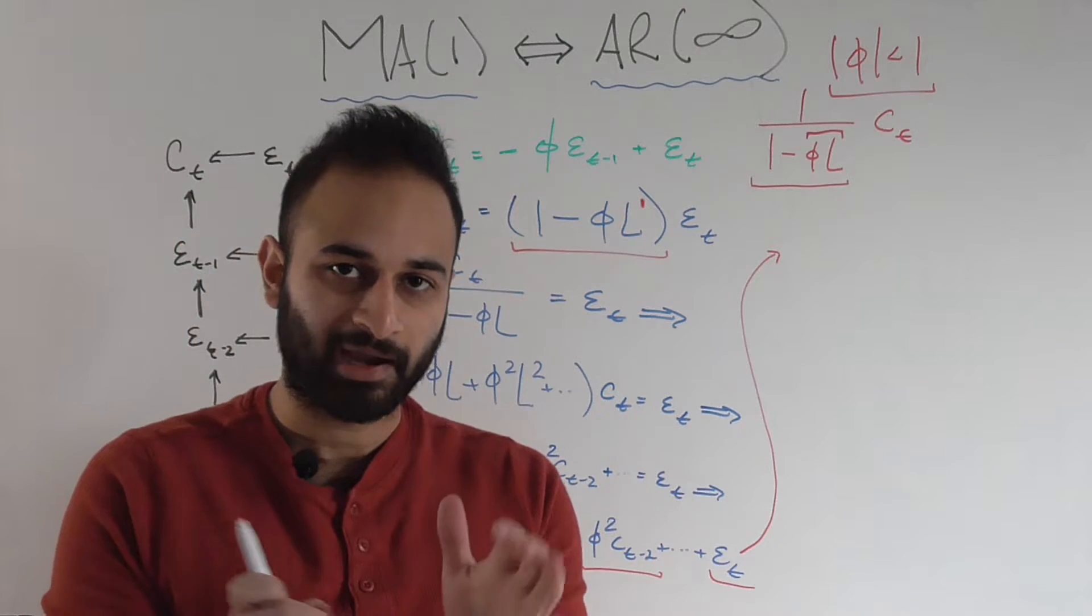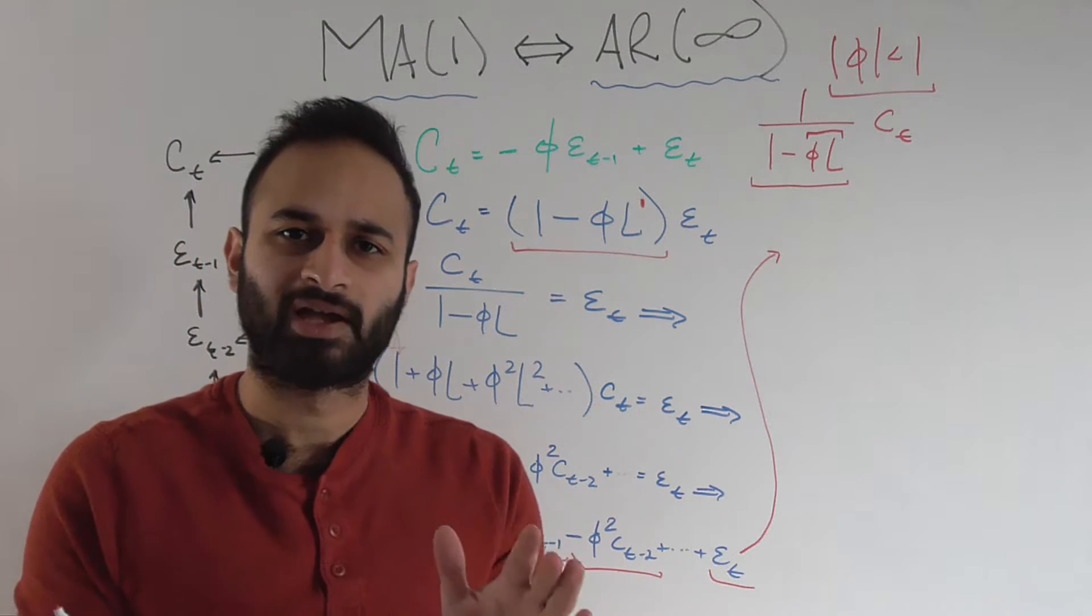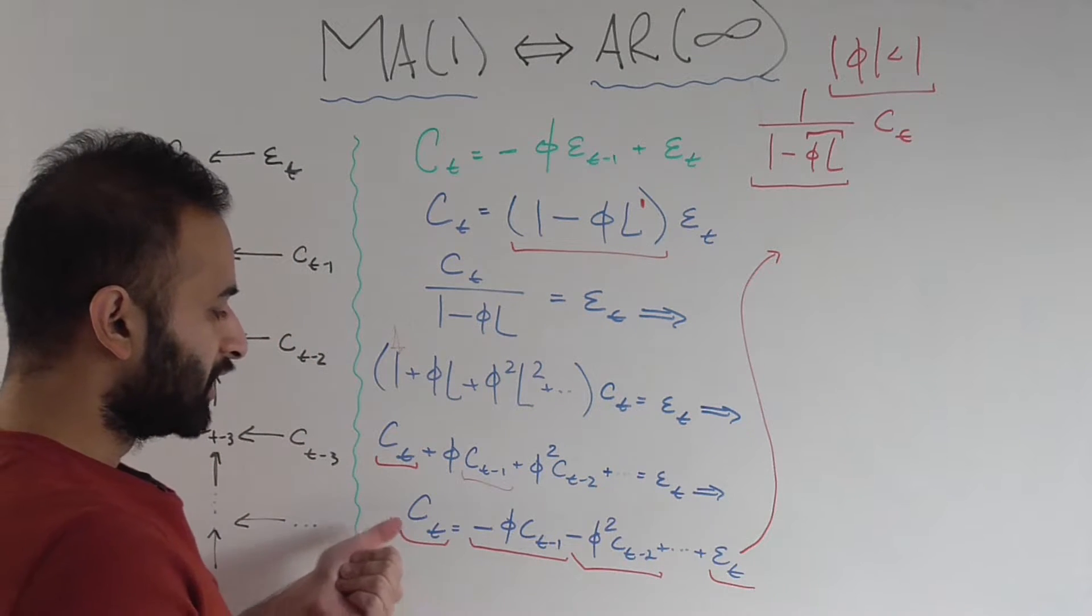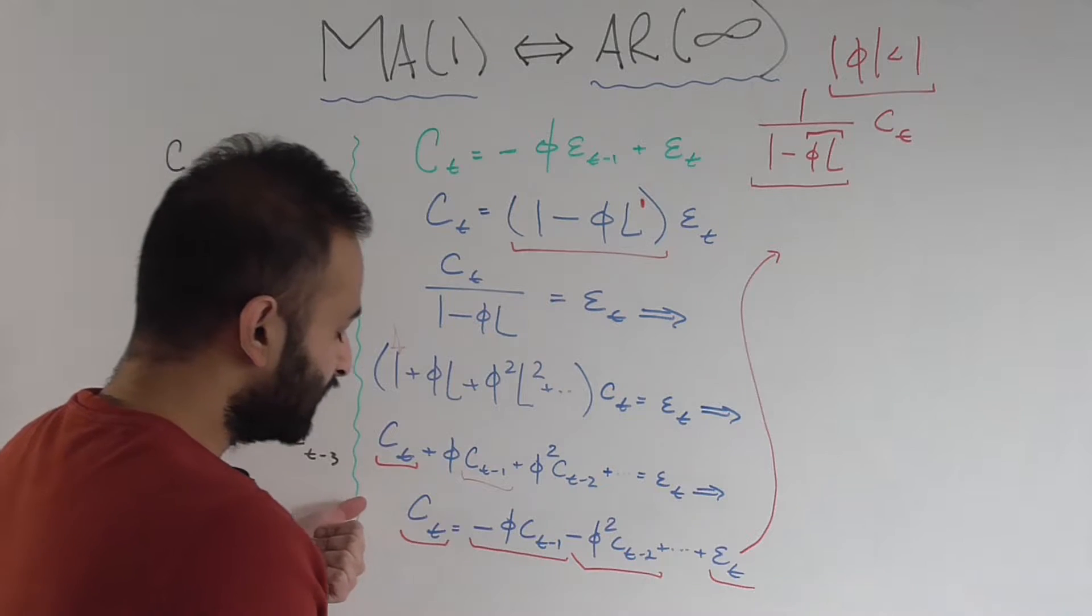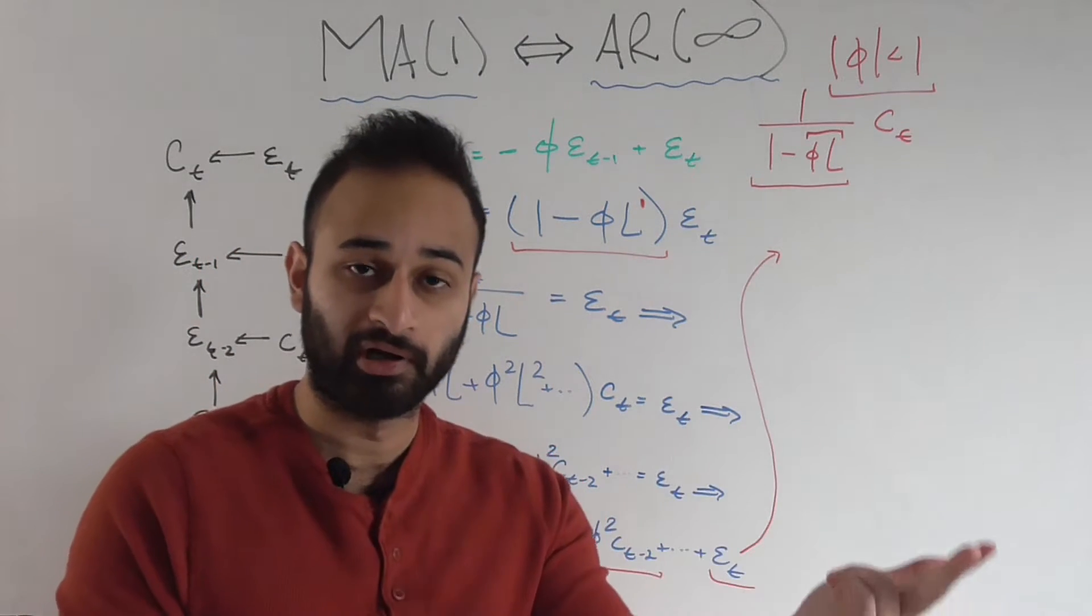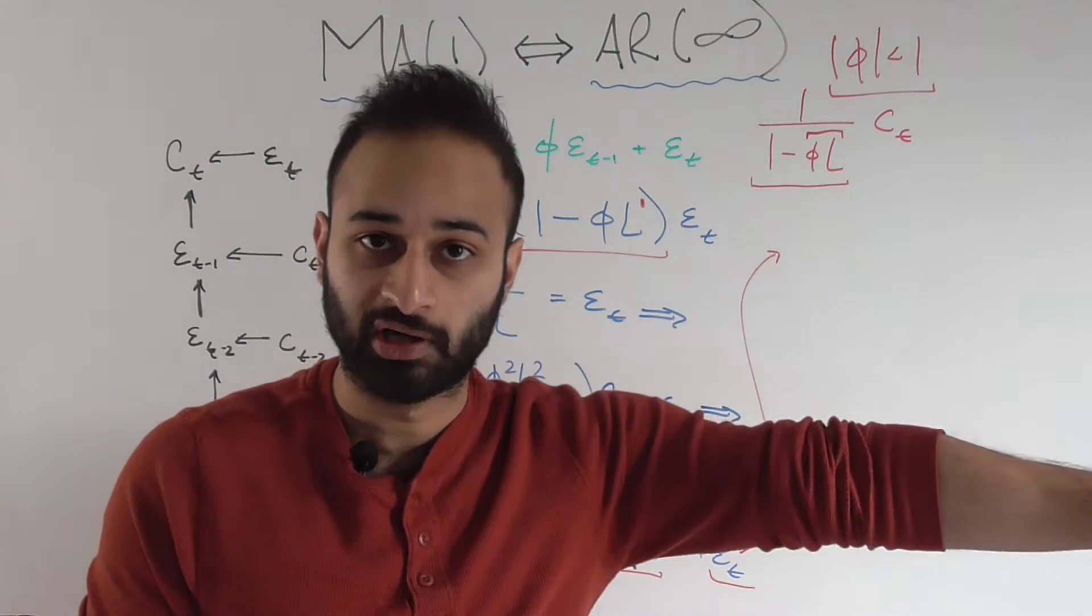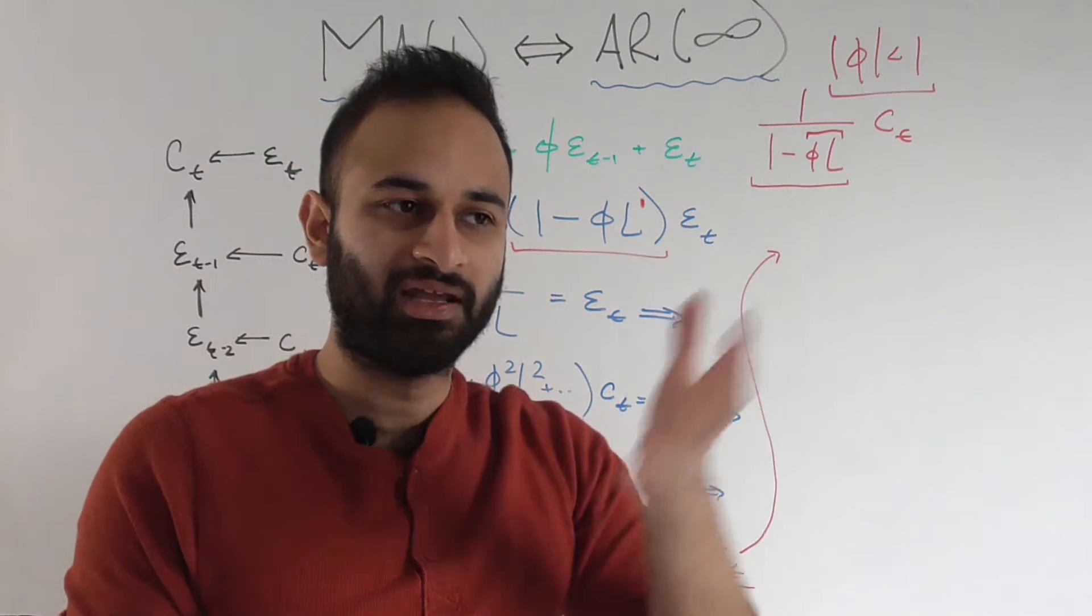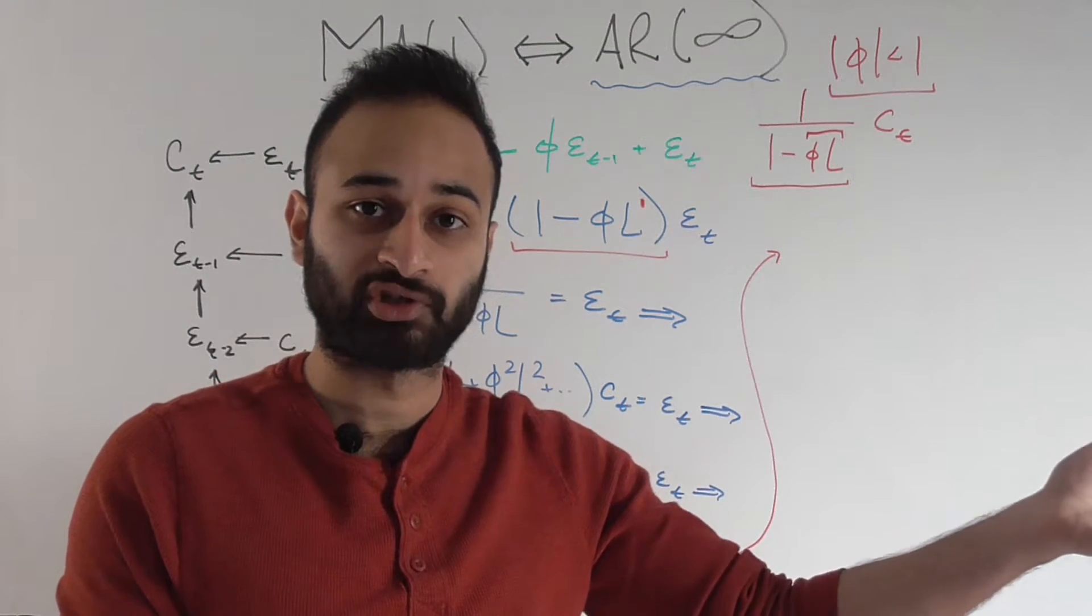But if you take a step back and look at what this giant massive mess actually contains, it basically says that my time series today is a function of the lags of my time series yesterday, two periods ago, three periods ago, and infinite periods ago. So at first glance it still seems like this is kind of unusable, right? Because how can I plug in infinite lags if I only have a finite time series?